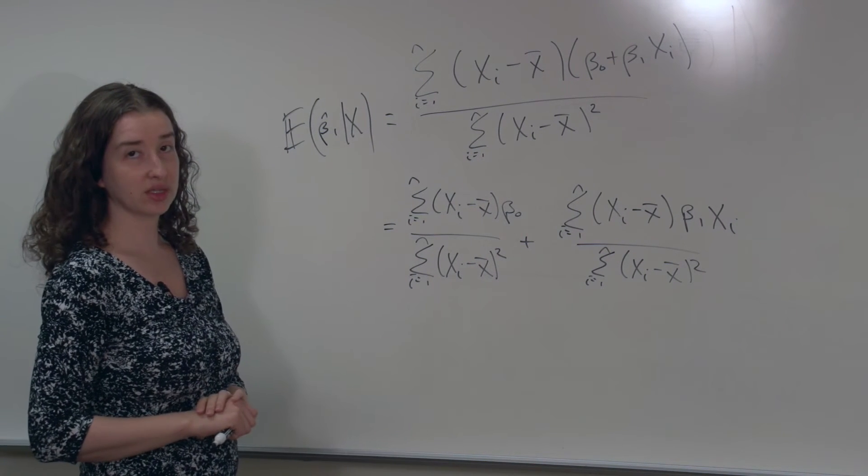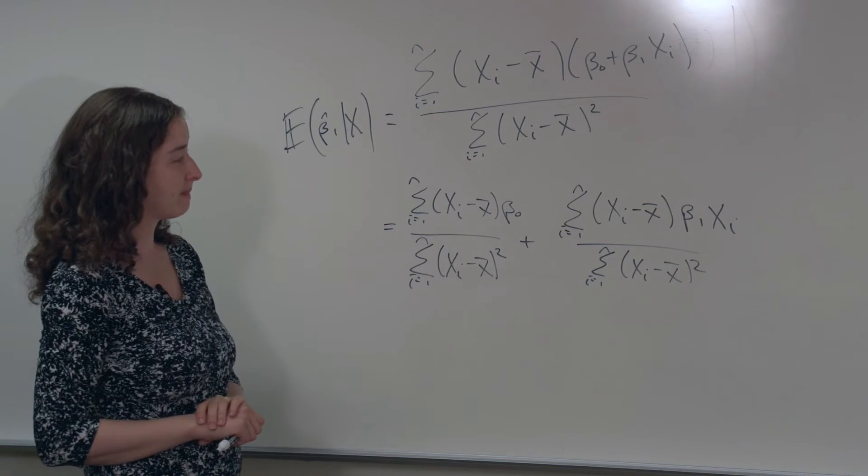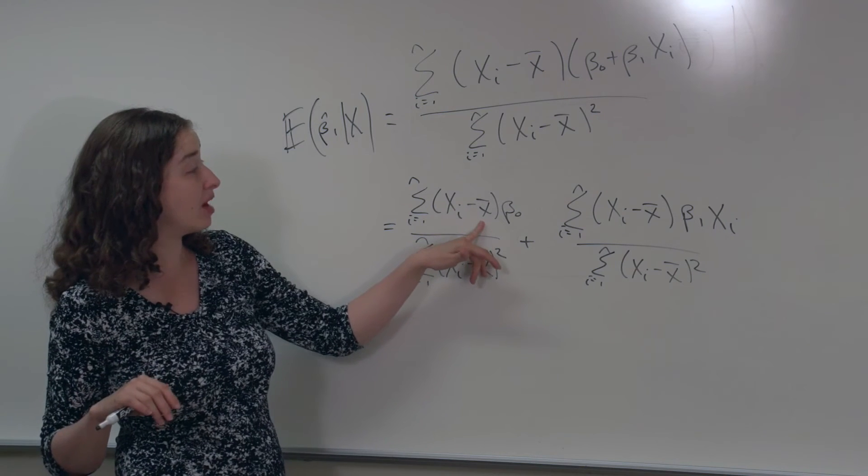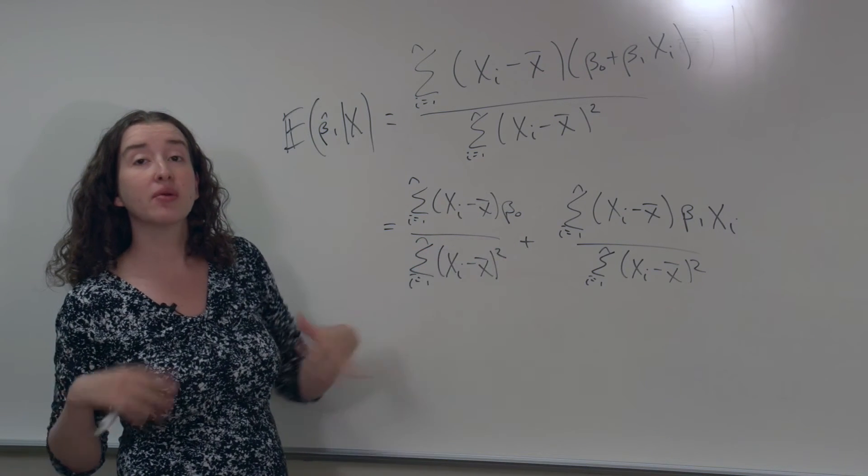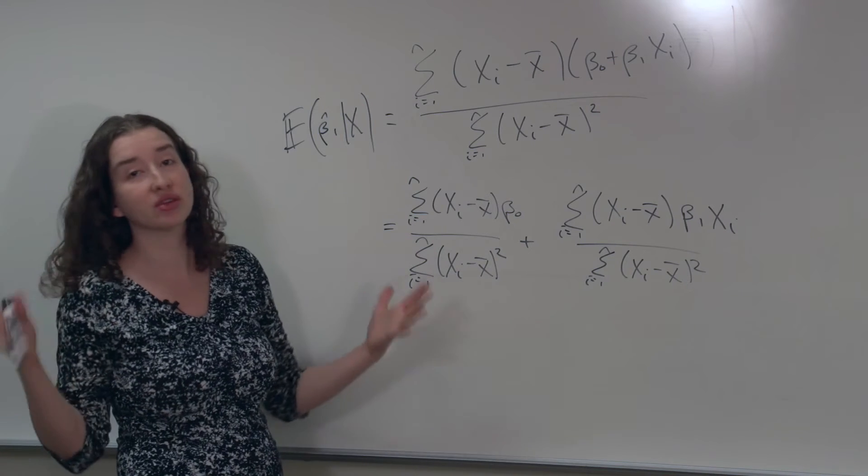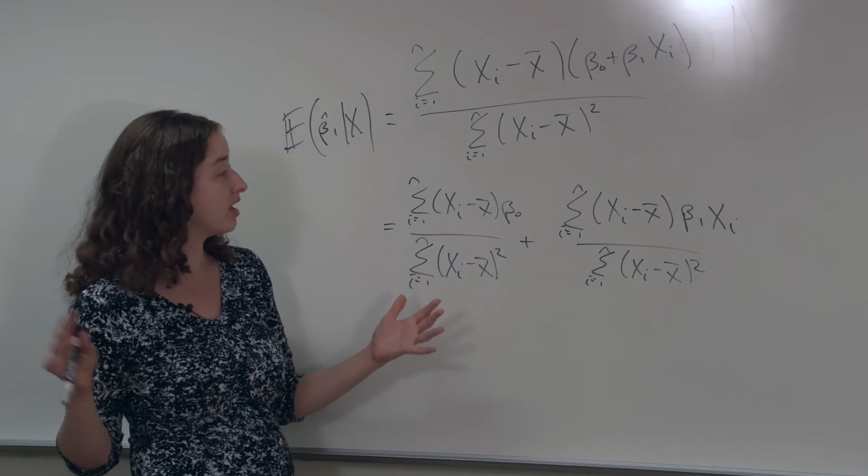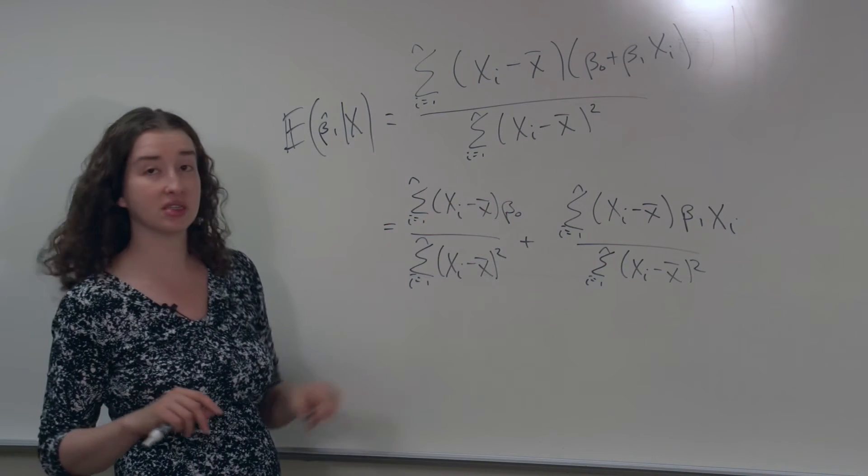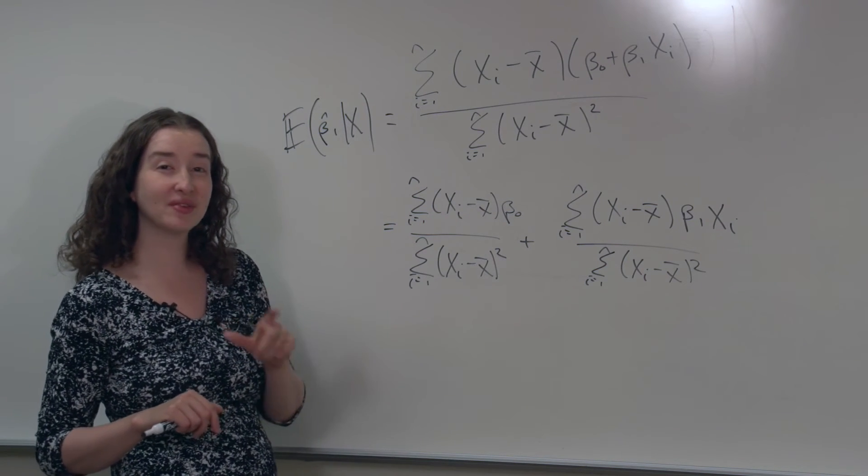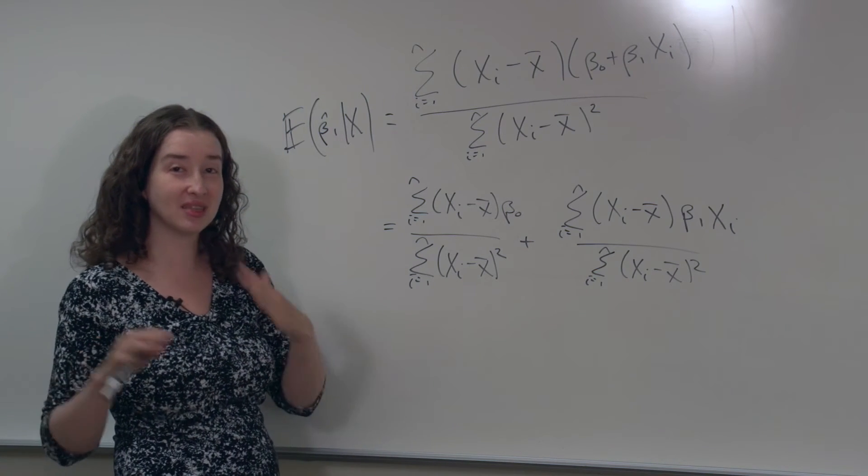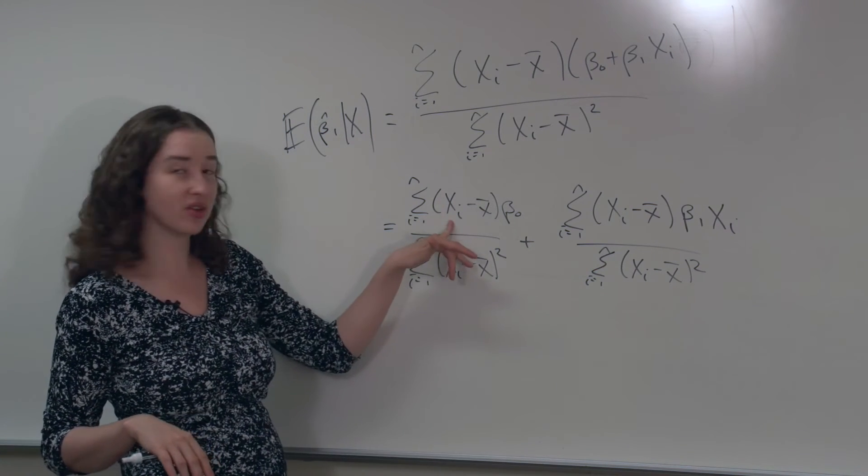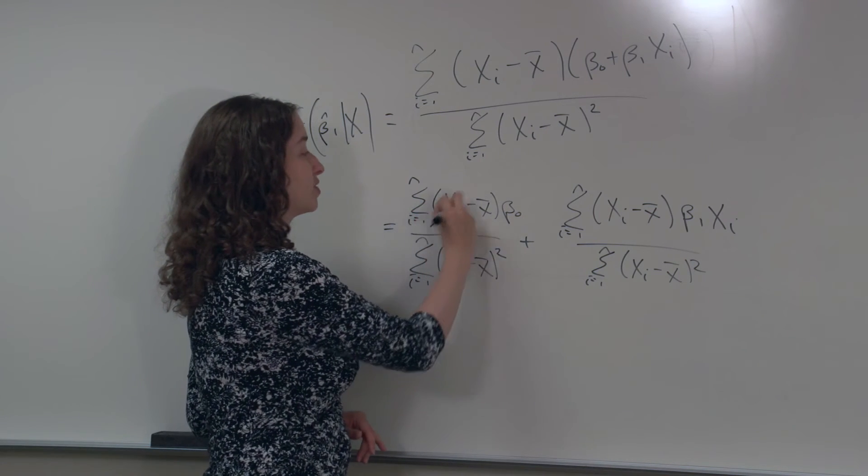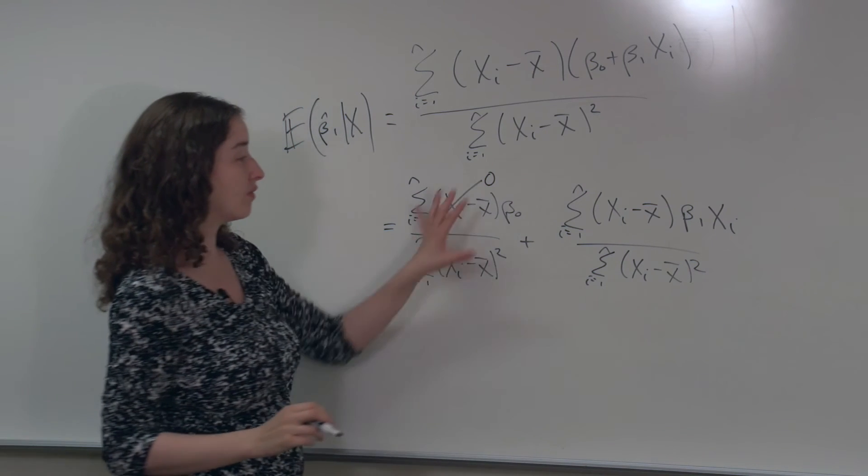What are we going to do with these quantities? Let's look at this first one. What do we have? We have the sum of each person's xi minus x-bar times beta 0. But remember that beta 0 is just the intercept. It's some true number, like 7. So I can take that out of the summation, 7 times the sum of the differences on x. But what's the sum of the differences between each value of x and the mean of x? It's just 0. This numerator here simplifies to 0 because the beta 0 is the same, regardless of which person we're thinking of. This whole first term is gone.